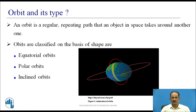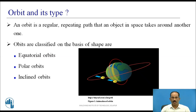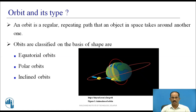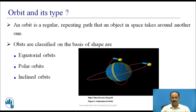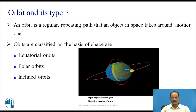In this video, we shall see what is an orbit and what are its types. An orbit is a regular repeating path that an object in space takes around another one. Here, object refers to satellite and it revolves around the earth. The simple way of defining the orbit is: the path followed by the satellite is called an orbit.